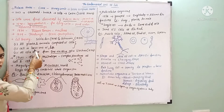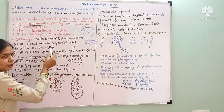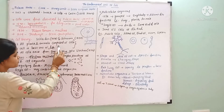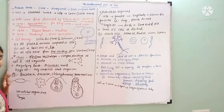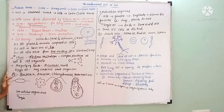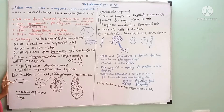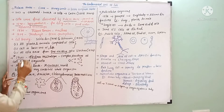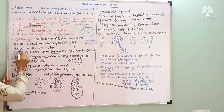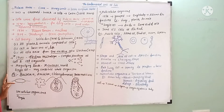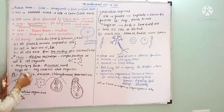Schleiden stated that all plants and animals are composed of cells, and the cell is the basic unit of the body. Bodies often contain cells, and the cell is the fundamental structural unit.